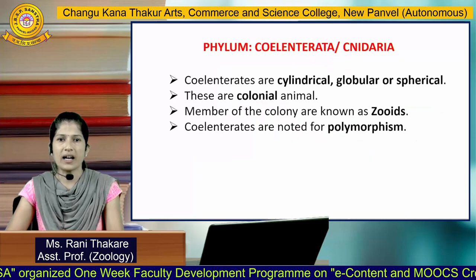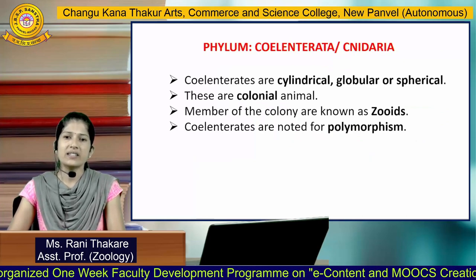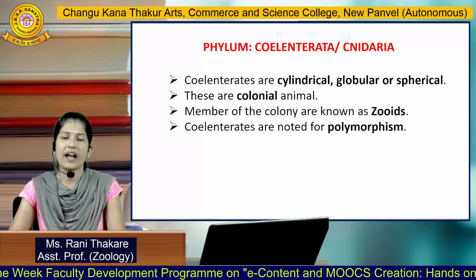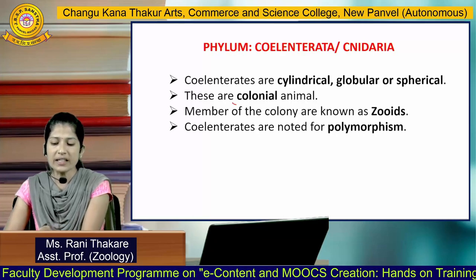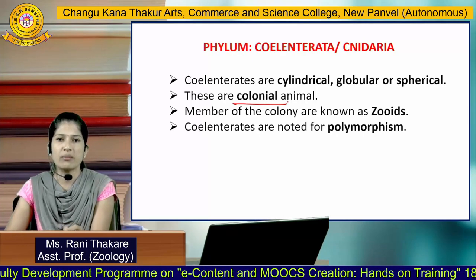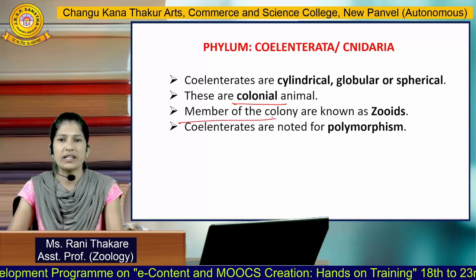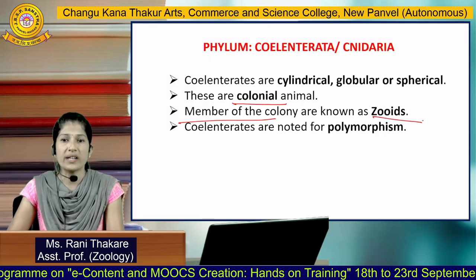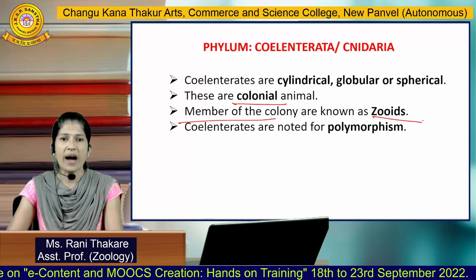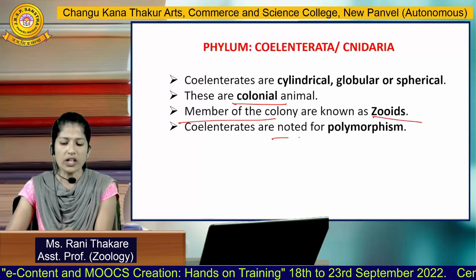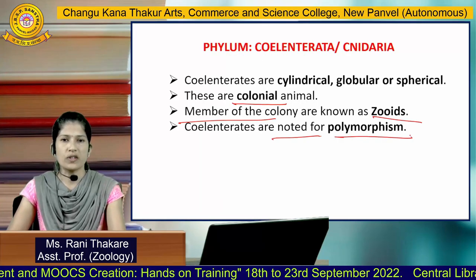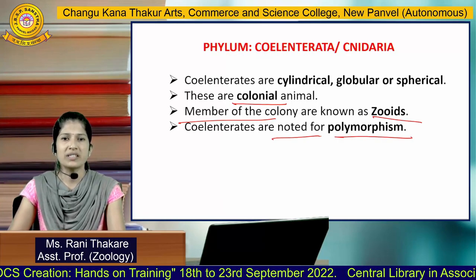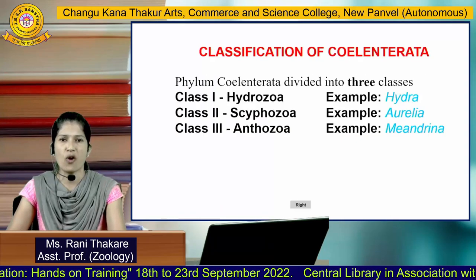Phylum Coelenterata includes cylindrical, globular, and spherical animals. These are mainly colonial animals, and a single member of the colony is known as a zooid. Coelenterates are notably marked by polymorphism — 'poly' means many and 'morph' means form — meaning these members exist in different forms.